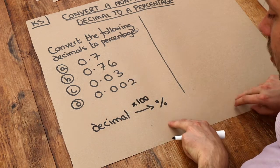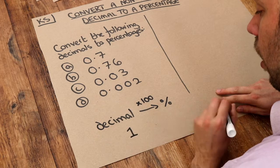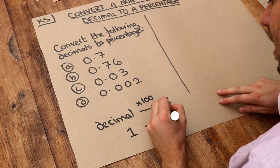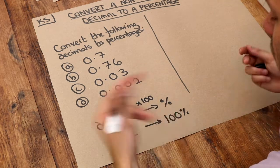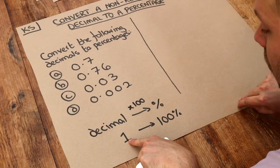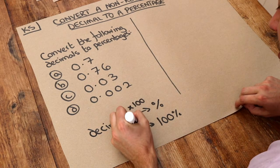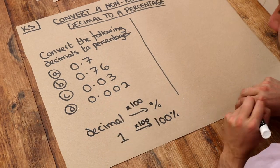That's because if we had a whole, a whole is 100%. Remember, 100% means all of something. We have a whole of it. You can see to get from 1 to 100%, we have to times by 100. 1 times 100 is 100.